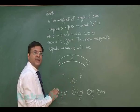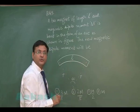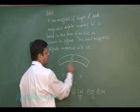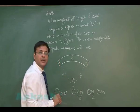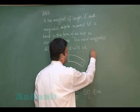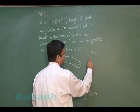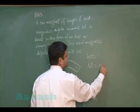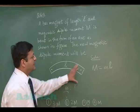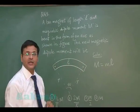The magnetic dipole moment depends on the straight distance between the two poles — one pole is marked here, another here. Initially, when the magnet was straight, the magnetic dipole moment m equals small m (pole strength) multiplied by l, where the initial length was given as l.